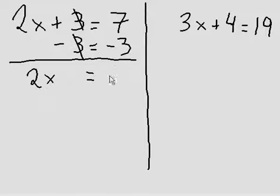2x is equal to 7 minus 3, 4. Now 2x is equal to 4. Okay, so how can we solve for x? Simple!